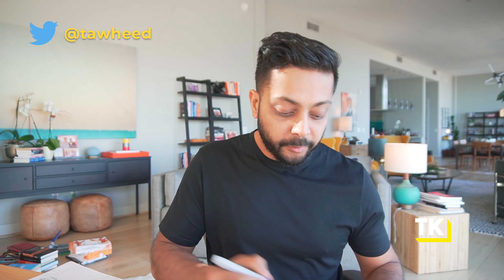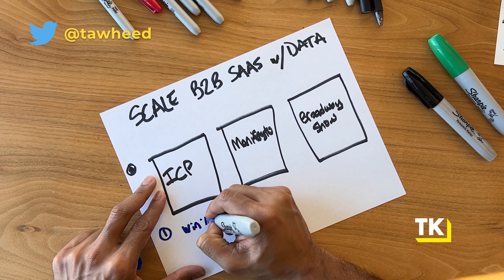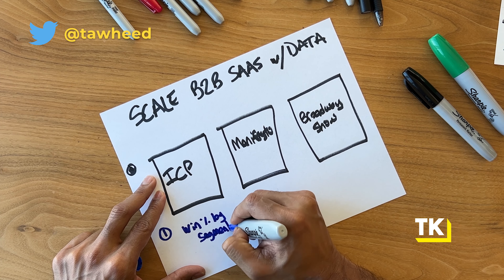Principle number one is the first piece of data that you want to look at: your ICP. The biggest piece of data that I've found to be eye-opening — I work with founders all the time when they're revamping their go-to-market strategy and we do an ICP exercise — everyone thinks they have an ideal customer profile until they go through my process. One of the pieces of data that we look at for companies that already have revenues is their win percentage by segment. This is the first piece of data that I've found to be eye-opening every single time.